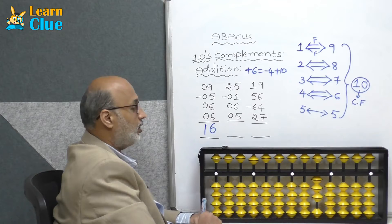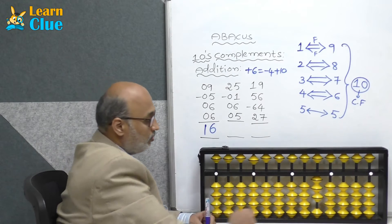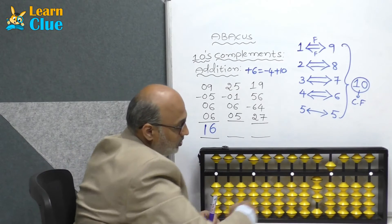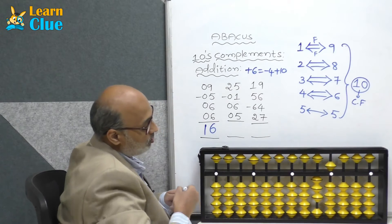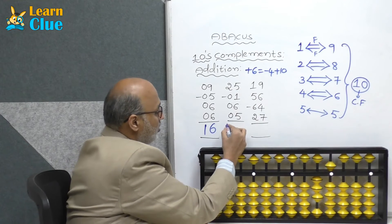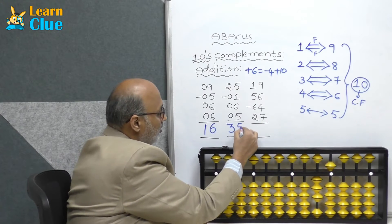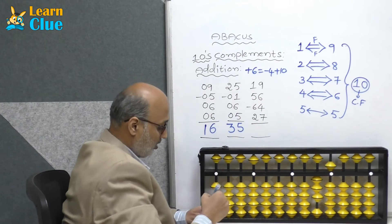Plus 10. Now they are asking plus 5, which is direct. So what is the answer? Answer is 35.